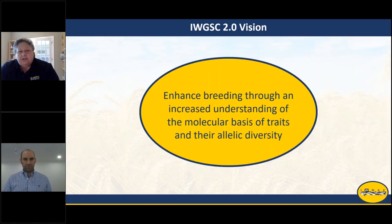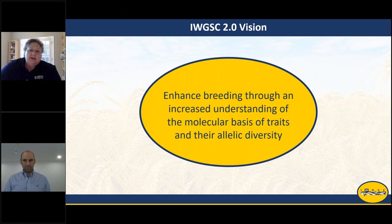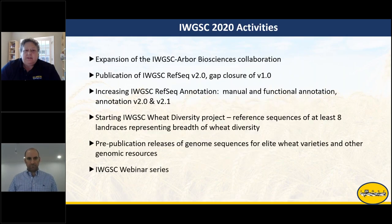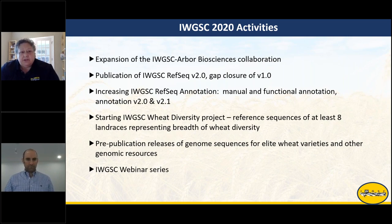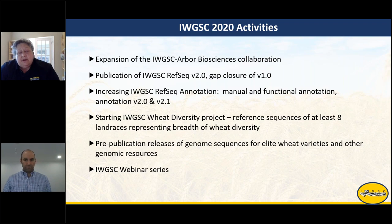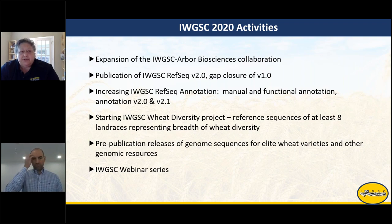The vision for the IWGSC is what we call IWGSC 2.0, post the high-quality reference sequence, to enhance breeding through an increased understanding of the molecular basis of traits and their allelic diversity. Some of our activities right now include expanding the IWGSC Arbor Biosciences collaboration, and we hope to have out very shortly the IWGSC RefSeq v2.0 and 2.1 with gap closure from version one, as well as the manual and functional annotation of those versions.